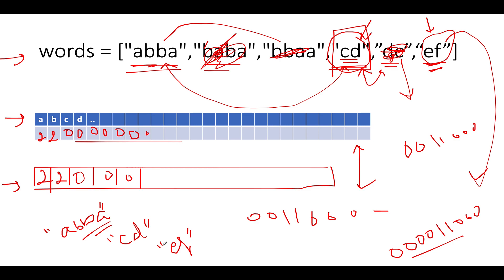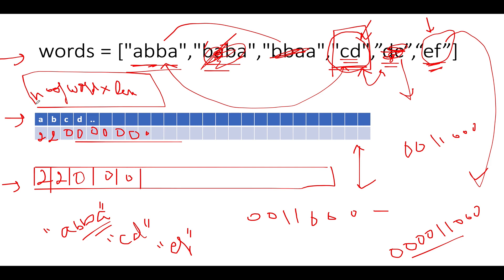The time complexity of this approach is O(N × L), where N is the number of words and L is the length of each string, since we iterate through the word array once. The space complexity is constant — we use an extra space of size 26 characters for generating the frequency string for each word, so space complexity remains O(1).